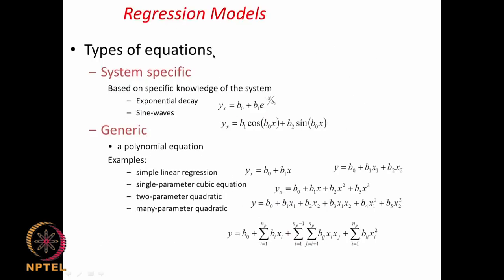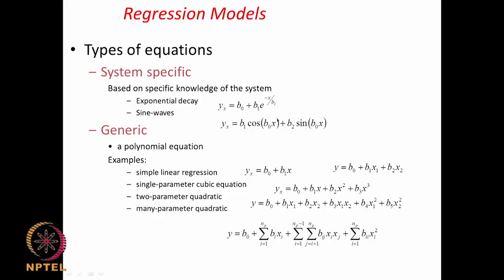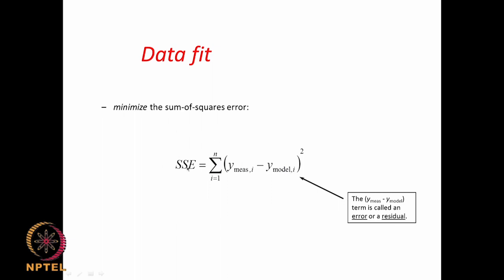There are many types of regression models. If you know the physics, you can use an exponential decay model — for example, drug release from a carrier may follow exponential decay. You can also fit sine/cosine waves, or polynomial relationships: simple linear (b0 + b1*x), multilinear (b0 + b1*x1 + b2*x2), quadratic (b0 + b1*x + b2*x²), or models with many parameters including interaction terms x1*x2.